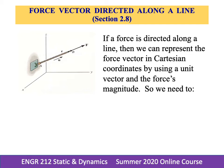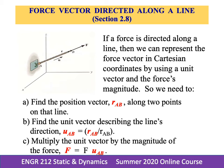If a force is directed along a line then we can represent the force vector in Cartesian coordinates by using a unit vector and the force's magnitude. To define this vector we find the position vector r, a, b along the two points on that line. And we find the unit vectors describing the line's direction with regards to the coordinate system that we have been using so far, the x, y, and z coordinate systems. And we can multiply the unit vector by the magnitude of the force.